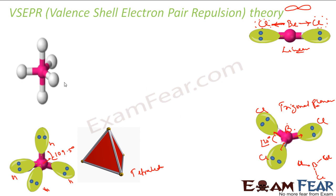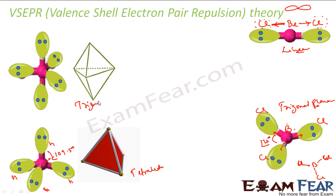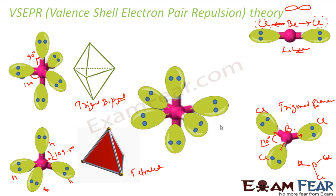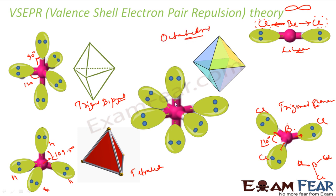For five electron pairs, all five repel each other and form a trigonal bipyramidal shape. The equatorial angles are 120° and the axial angles are 90° — it is three-dimensional. For six electron pairs, all six repel and form an octahedral shape. In the octahedral, every angle is 90° regardless of which pair of bonds you measure.